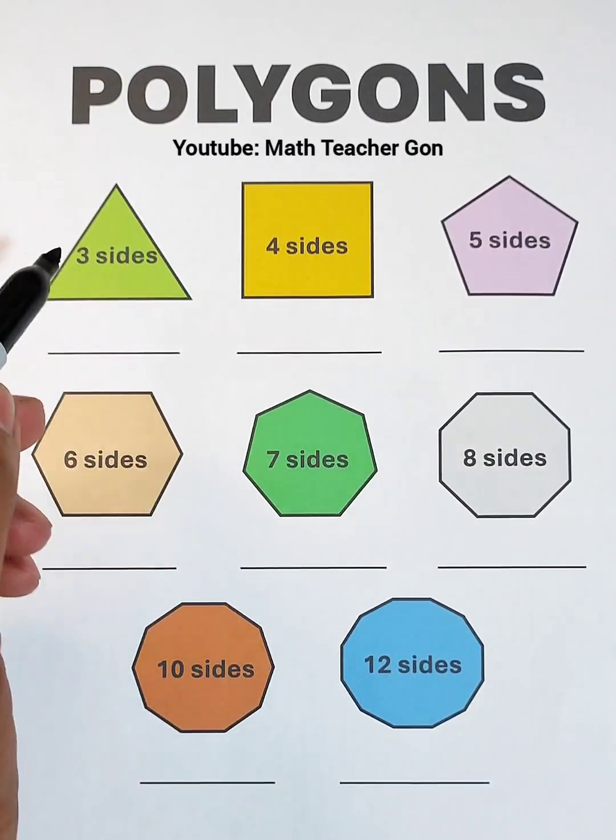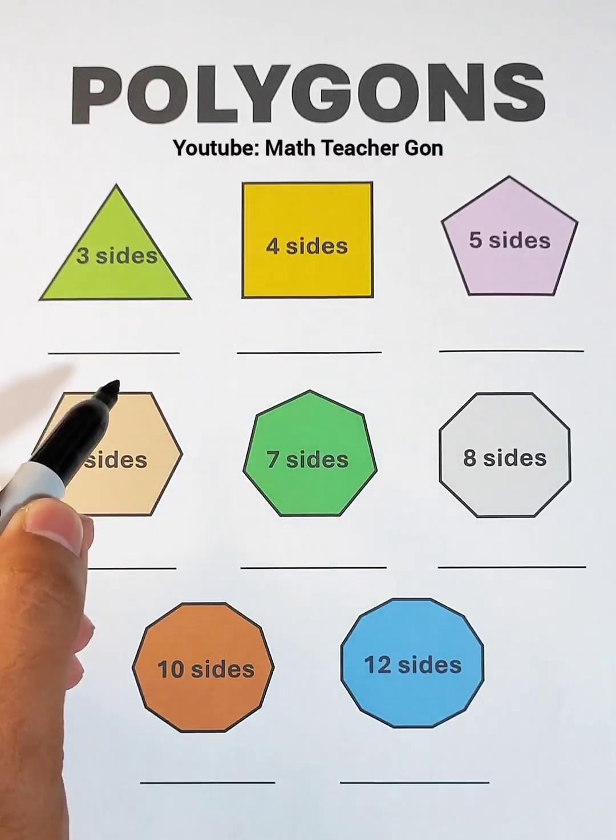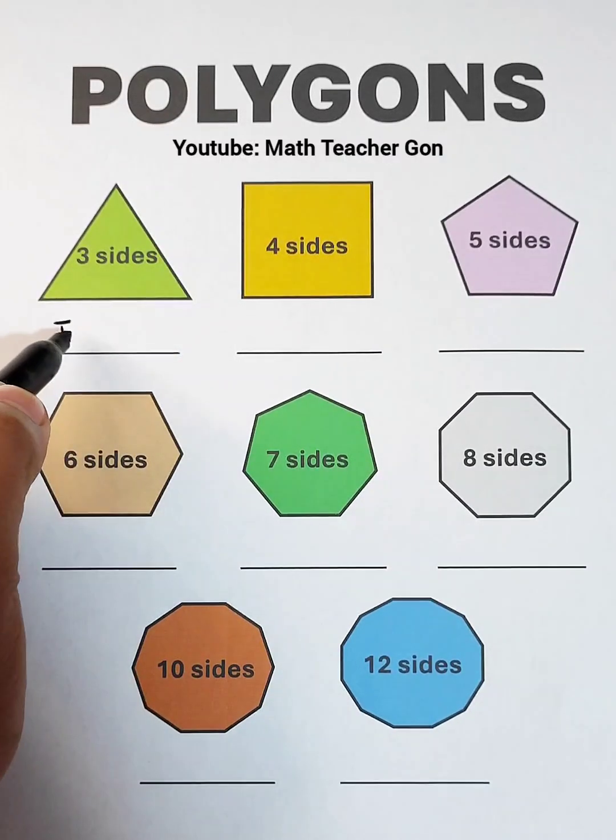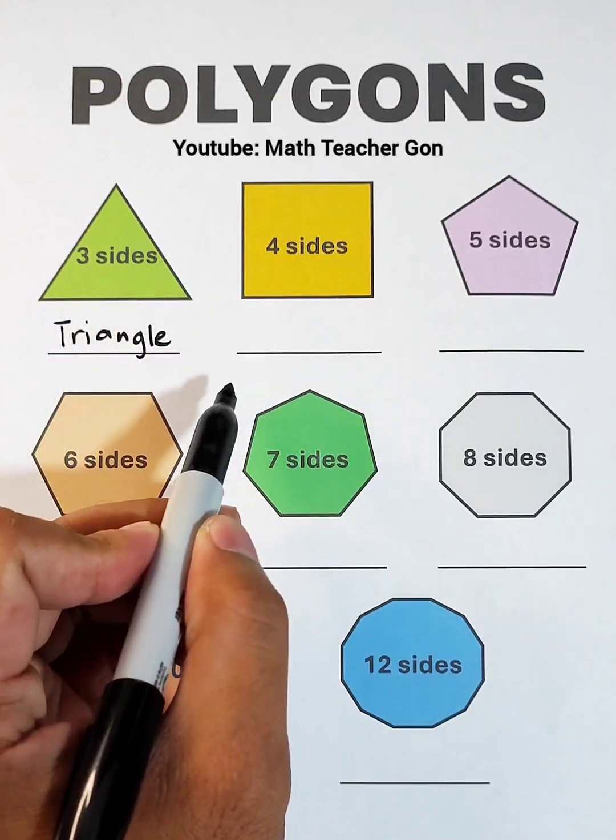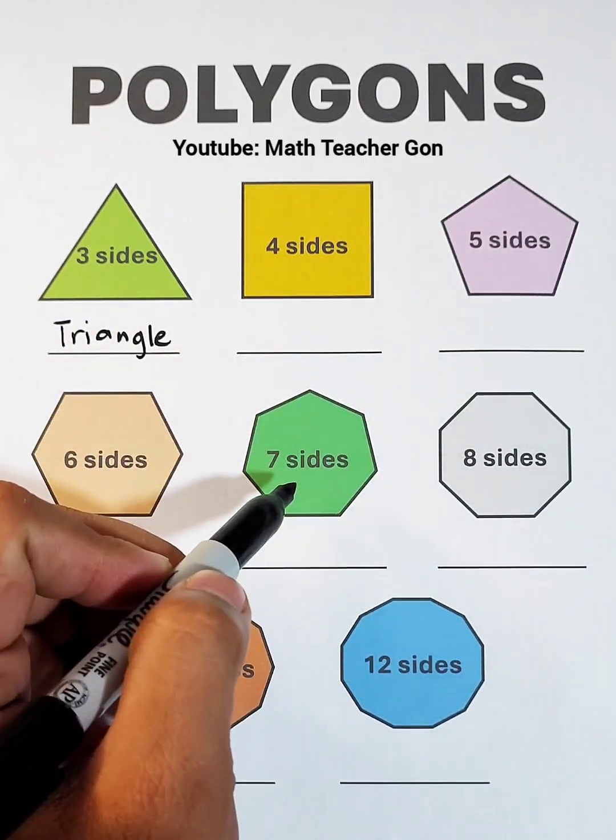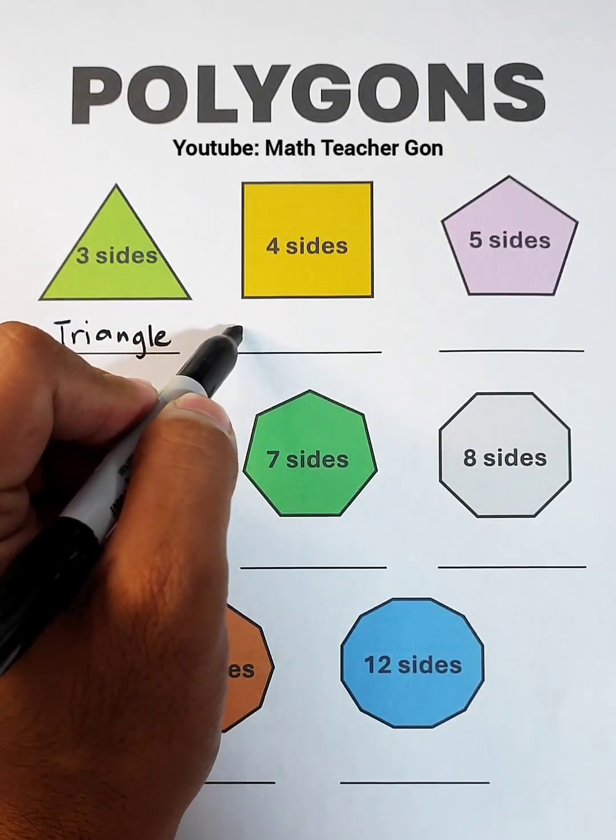Let's start with the first polygon with three sides. A polygon with three sides, it's what you call triangle. Next, the polygon with four sides is named as quadrilateral.